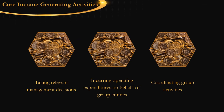Now let's look into the core income generating activities of a headquarters business. There are three core income generating activities: taking relevant management decisions, incurring operating expenditures on behalf of the group companies, and coordinating group activities. The first one, taking relevant management decisions, refers to making decisions on the substantive functions and significant risks of the group companies, such as decisions on material acquisitions and purchases, group company sales and marketing strategy, product development, business process standardization, etc. For a decision to be seen as being made in the UAE, the majority of those making the decision should be physically present in the UAE.